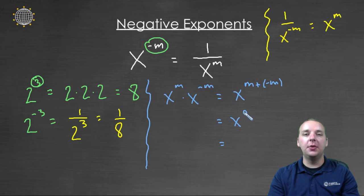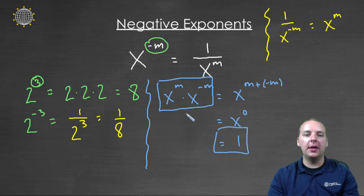Right? Because m plus negative m cancel and leave you with zero. And x to the zero equals one. So I know that this quantity here must equal one. Well just think about that, as long as x to the m or x to the negative m, as long as neither one of those are zero, then I'll ask you here in pink, what would x to the negative m equal then?